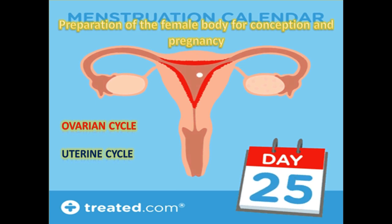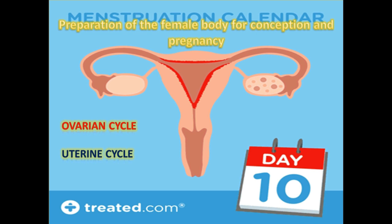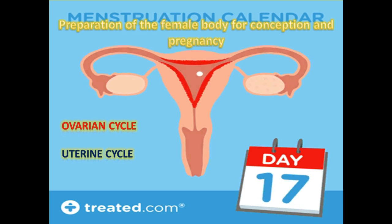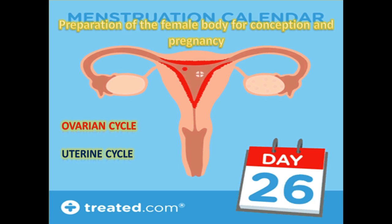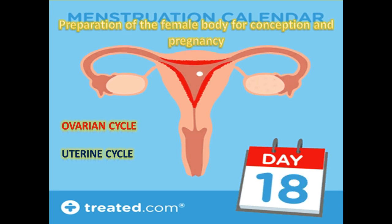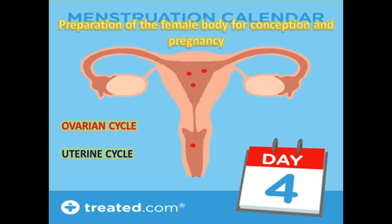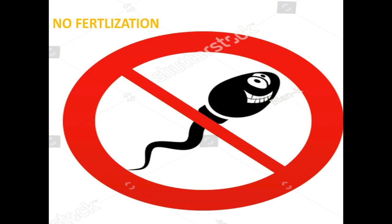The ovarian cycle includes events taking place in the ovaries, while the uterine cycle depicts events of the uterus. You can see that an ovum is releasing from one of the ovaries into the fallopian tube, leading its way to the uterus where it disintegrates, and the endometrium — the innermost lining of the uterus — begins shedding when no fertilization has occurred. This phase is approximately 28 days, during which both the ovarian and uterine cycles are completed.